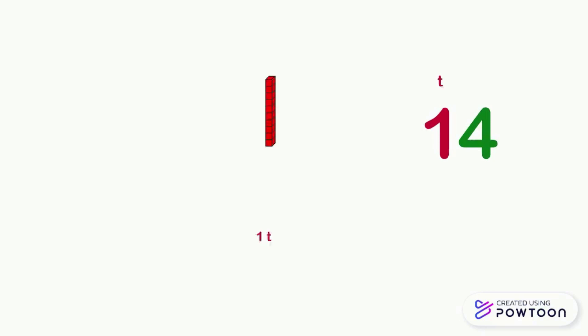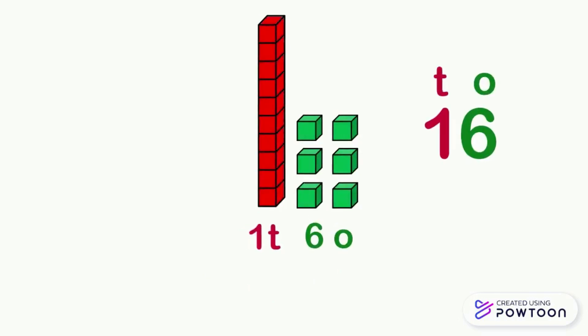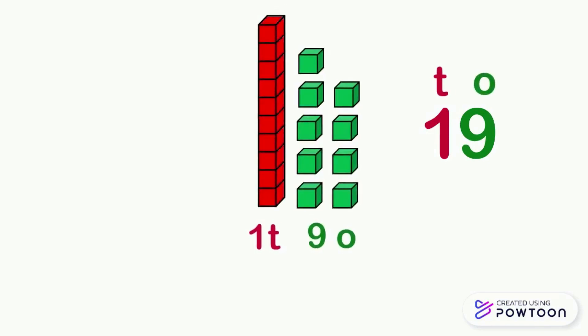Similarly, in the number fourteen there are one ten and four ones — fourteen equals ten plus four. In the number sixteen there are one ten and six ones — sixteen equals ten plus six. In the number nineteen there are one ten and nine ones — nineteen equals ten plus nine.